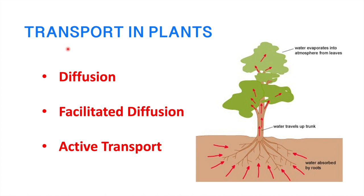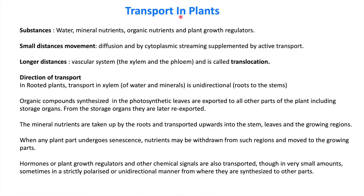Today we will study the transportation system in plants. Have you ever thought about how minerals, organic compounds, and water move from the ground to different parts of the plant body? In this video we will study diffusion, facilitated diffusion, and active transport mechanisms. The substances transported in plants include water, mineral nutrients, organic nutrients, and plant growth regulators.